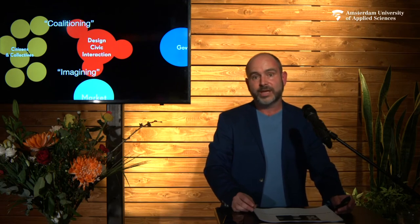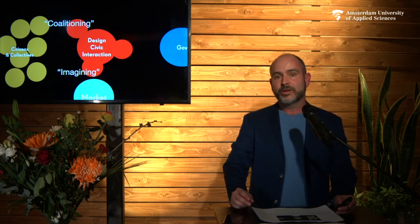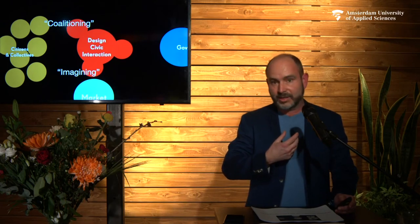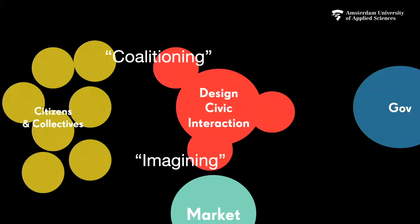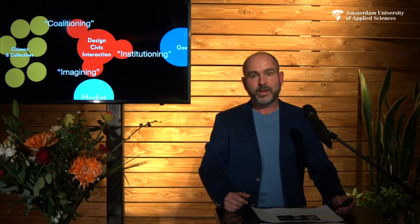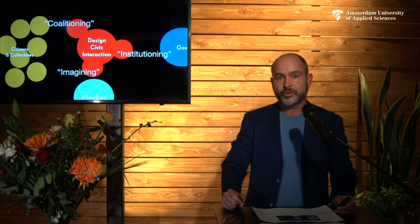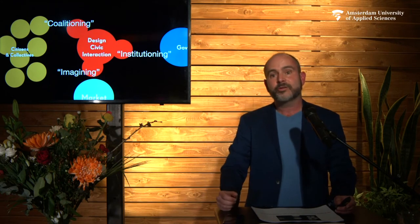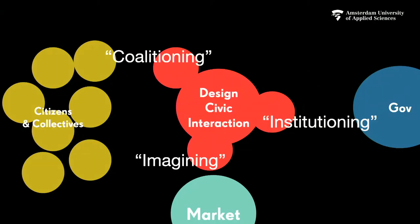Something else that we see design being really good at is something we call imagining. Designers use their imaginative powers to think through what the impact of technology on society can be — by coming up with alternatives, critiquing some of the developments we're seeing, and bringing out a broader discussion. A last important new role, also perhaps for design, is something we call institutioning — making a relation between all the citizens, the collectives, and governance.